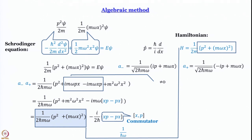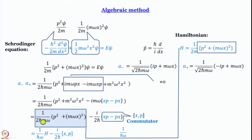The commutator of x and p can be written [x, p] for any pair of operators: [a, b] = ab − ba, and sequence is important — [x, p] has the opposite sign to [p, x]. The advantage is that [x, p] has already a known value, and we are going to work it out now. Once we have it, we get a convenient way to write the Hamiltonian.